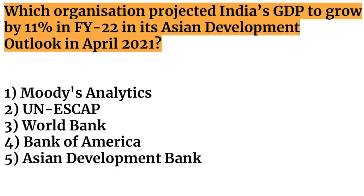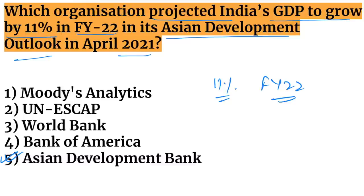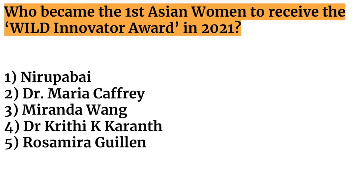Next question: which organization projected India's GDP to grow by 11% in fiscal year 2022 in its Asian Development Outlook in April 2021? The Asian Development Bank (ADB) projected India's GDP growth at 11% for FY2022 in its Asian Development Outlook.